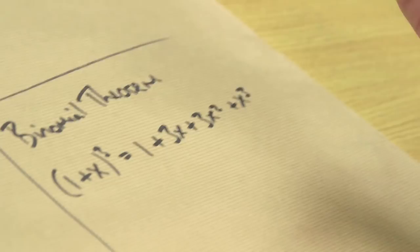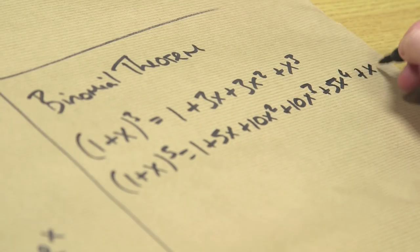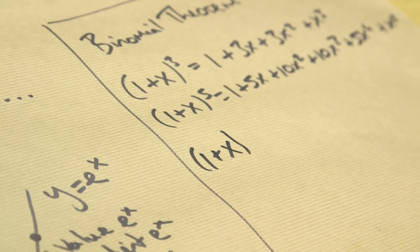If I did a harder one, 1 plus x to the power 5, using binomial theorem, I know it's 1 plus 5x plus 10x squared plus 10x cubed plus 5x to the 4 plus x to the 5.